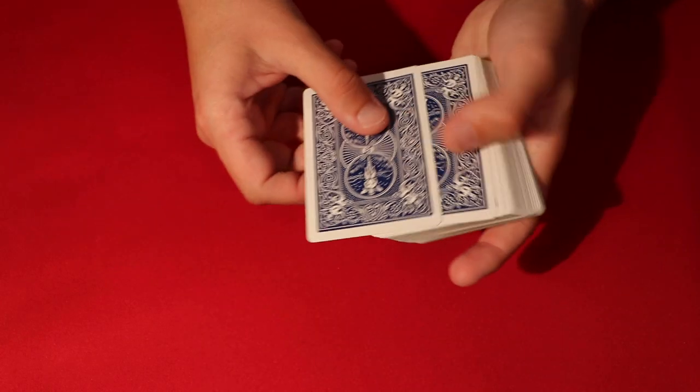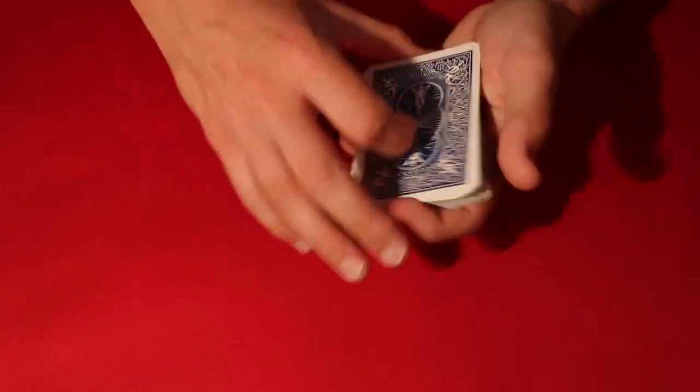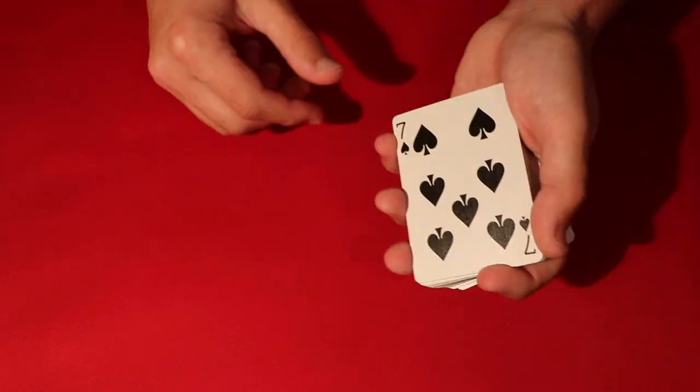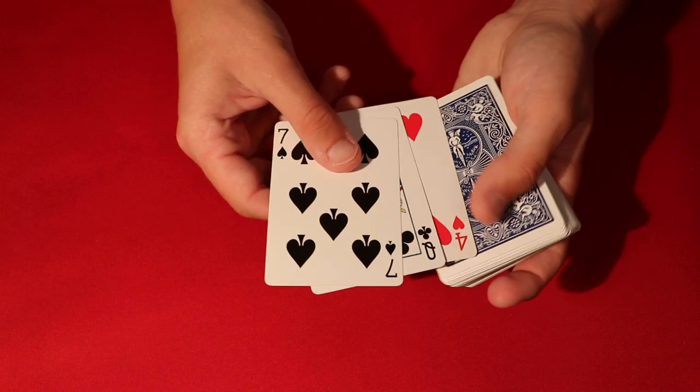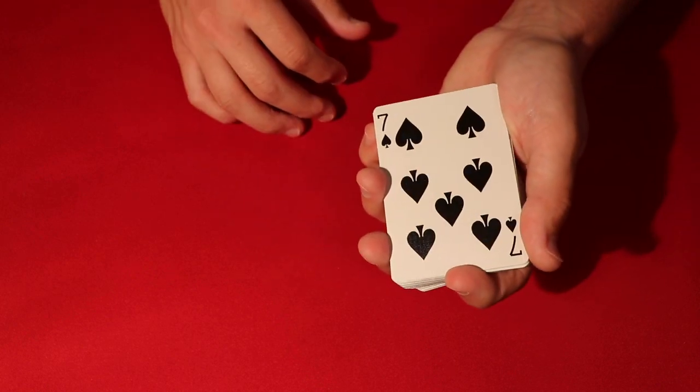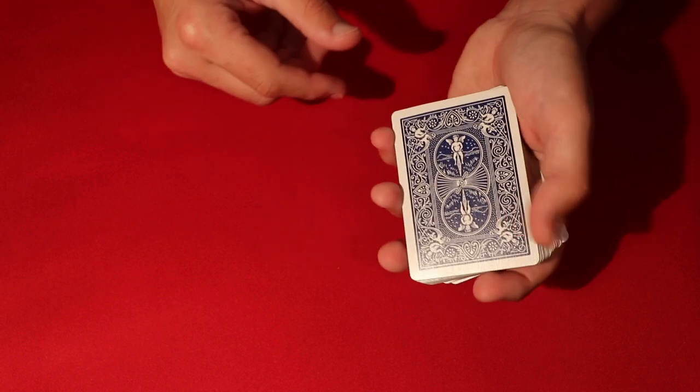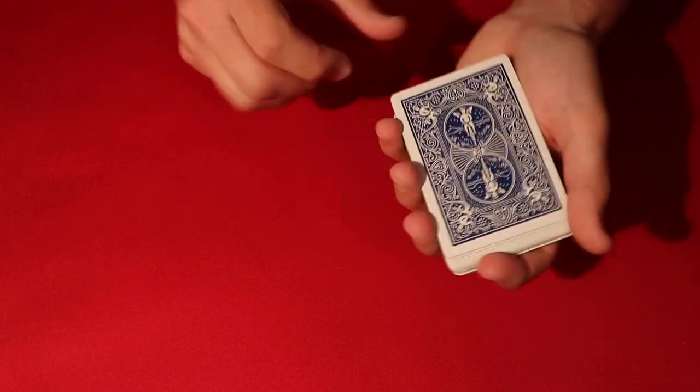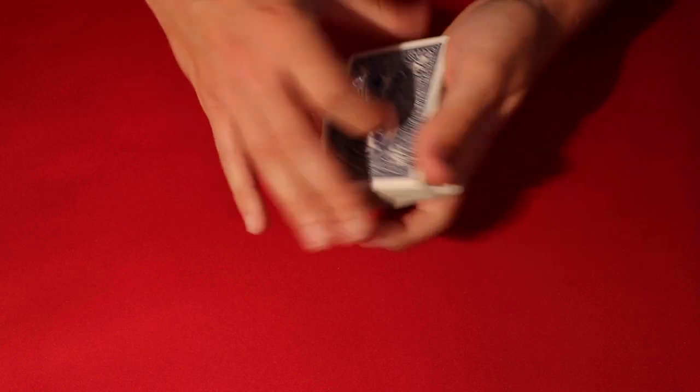So instead of just lifting over two cards, you do the same concept with three cards. So you lift over three cards. In this case, the top card looks like the seven of spades. And what you do is you say, okay, let's go ahead, let's put this card back into the middle, snap our fingers, and then once again,